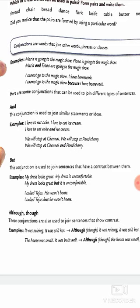Next, examples of conjunctions. First, 'and'. This conjunction is used to join similar statements or ideas. I love to eat cake and ice cream. We will stop at Chennai and Pondicherry.